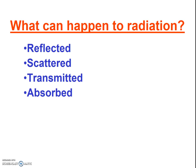Lastly, radiation can be absorbed. When an object absorbs solar radiation, it then re-emits that radiation as well, but the wavelength changes. The Earth absorbs the shortwave radiation from the Sun, and then it re-emits it as longwave radiation — infrared, heat.